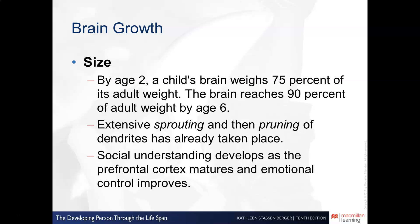By age two, a child's brain weighs about 75 percent of its adult weight, but by age six it reaches 90 percent of its adult weight — which is usually surprising to students to learn, given how rapidly the brain develops.